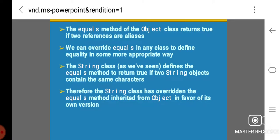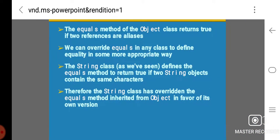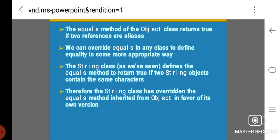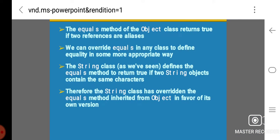The equals method of the Object class returns true if two references are aliases. We can override equals in any class to define equality in some more appropriate way. The String class defines the equals method to return true if two String objects contain the same characters. Therefore, the String class has overridden the equals method inherited from Object in favor of its own version.